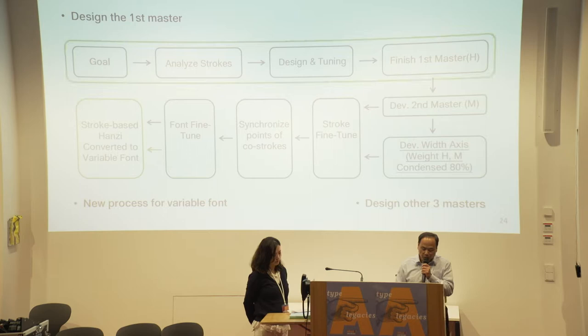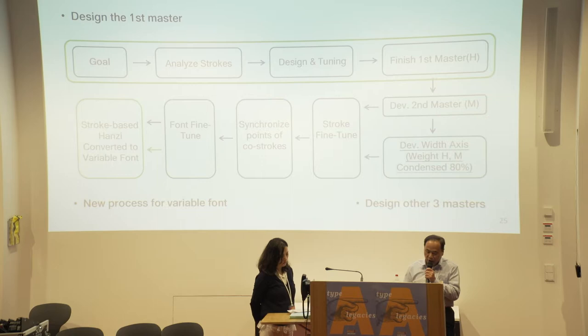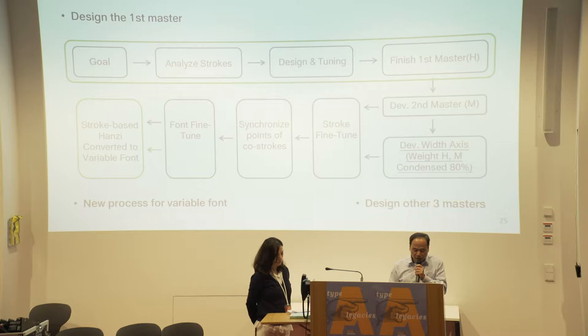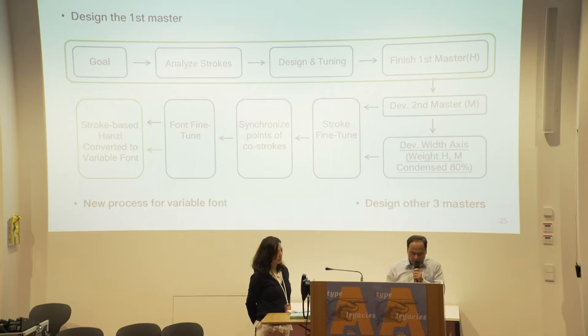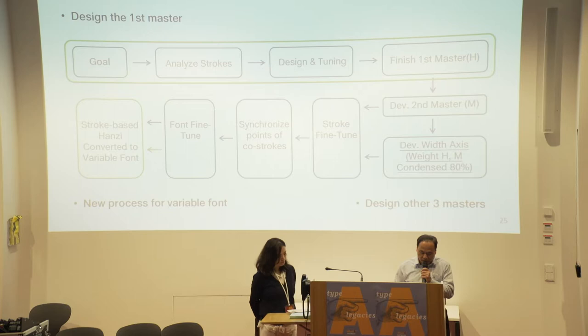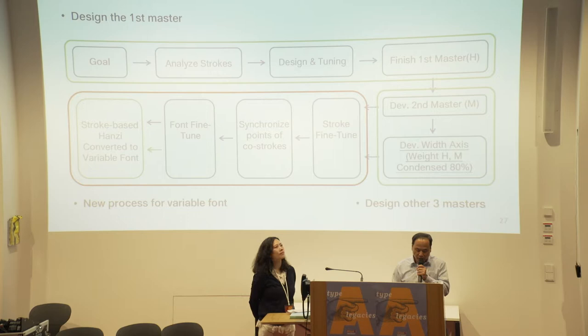The block at the bottom left is the latest developing process for variable fonts. Basically there are three new steps. First, in order to bring out the features of the variable font, we expand the second axis — width — to each interface besides the weight axis, and we developed a condensed font at 80% to 100%, which is most commonly used. Second, the way we create the variable font master is almost the same as before, but we need to make all the on-curve points compatible. Third, check and fine-tune every interpreted intermediate instance to make sure it is perfect.